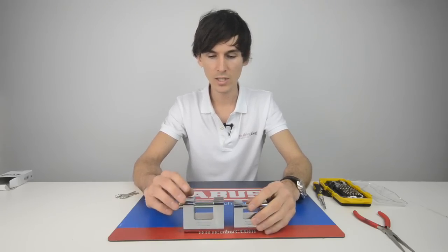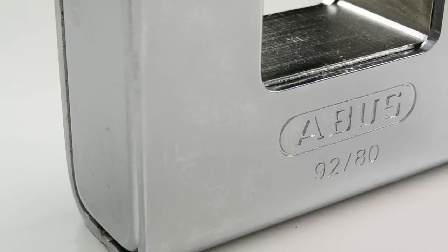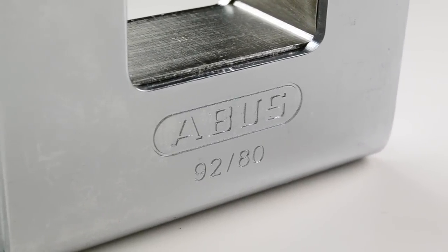So the 92 series is actually a solid brass body with a stainless non-corrosive mechanism but then shrouded in hardened steel. So it may as well be a solid hardened steel padlock.